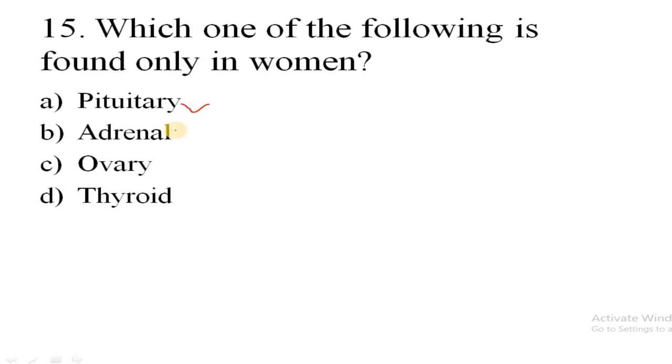The next question is, which one of the following is found only in women? Option A, pituitary gland - it's found in both male and female. Next option is adrenal - it's also found in both men and women. Then thyroid - it's also found in both men and women. But ovary is only found in women, not in men. In case of men we have testes. So this is the correct answer.